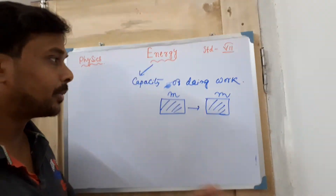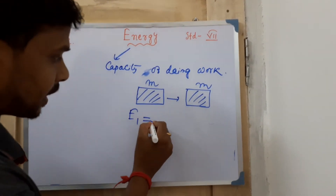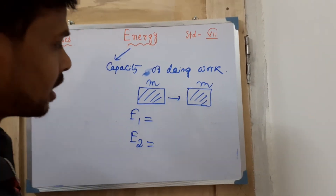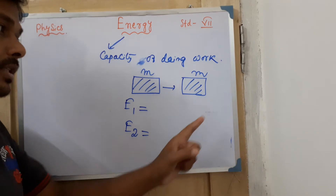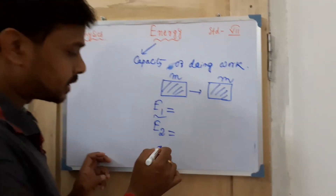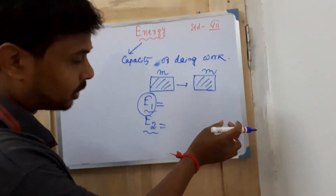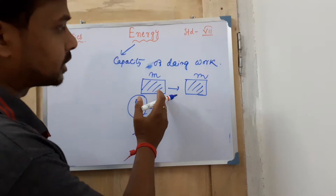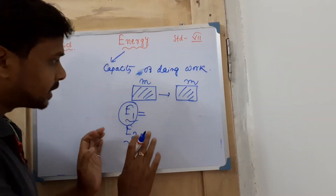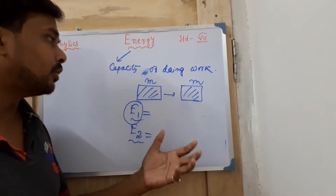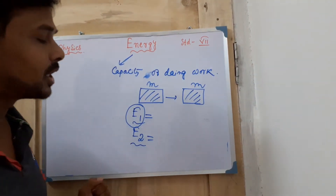The first person was not able to give displacement to the body. But if you ask about the energy of the first person and the second person — energy is present in both cases. For the first person, energy is present; for the second person, energy is also present. But the first person's energy was not sufficient to do that much work, while the second person's energy was sufficient to shift the body and do the work.